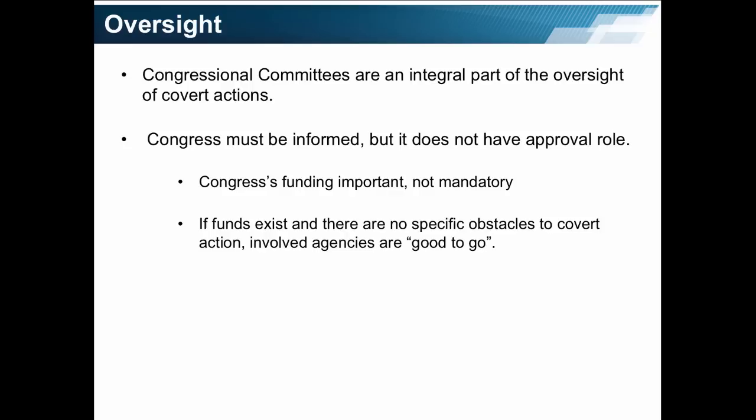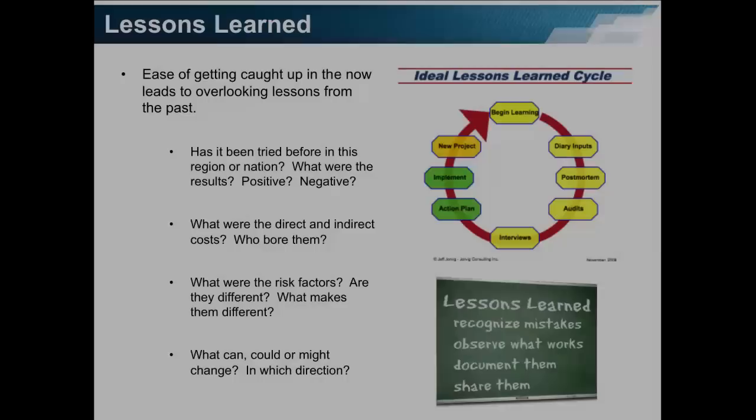Who has oversight in the U.S.? Congressional committees are an integral part of the oversight of covert actions. Congress must be informed by the executive branch — the office of the president — but it does not have an approval role. The approval remains with the president. Congress's funding is important, but it is not mandatory, as Iran-Contra proved. If funds exist and there are no specific obstacles to covert action, then all the agencies involved are good to go.